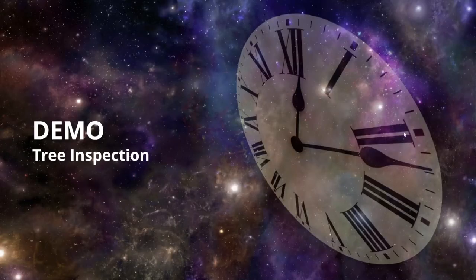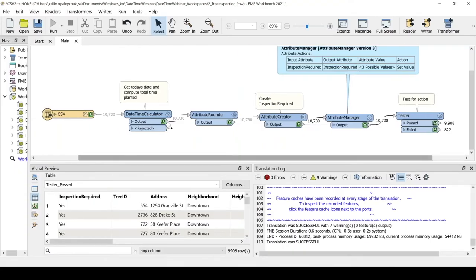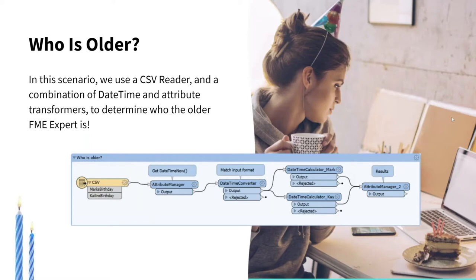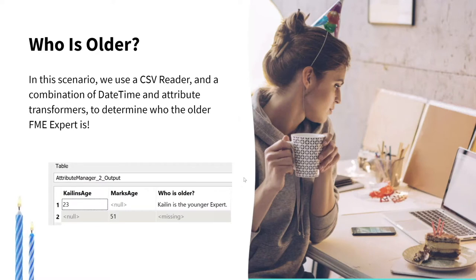That's a good demo. You could have used a Date-Time Stamper there too, but instead the current date was entered as a function directly into the Date-Time Calculator. The next example does the same kind of arithmetic — reading a CSV with two birthdates, using the Attribute Manager with a date-time function to get the datetime now, using the Date-Time Converter to align formats, then calculating the interval between them to find the result.